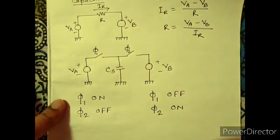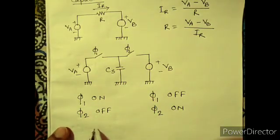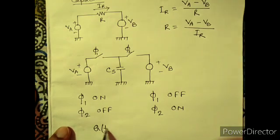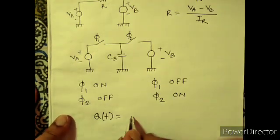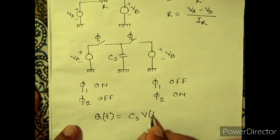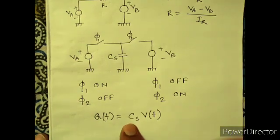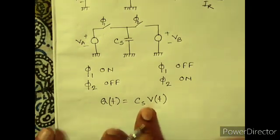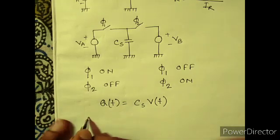When alternately we switch on and off, the charge across this capacitor, if we write Q of t, equals CS into V of t. Charge is capacitance times voltage.